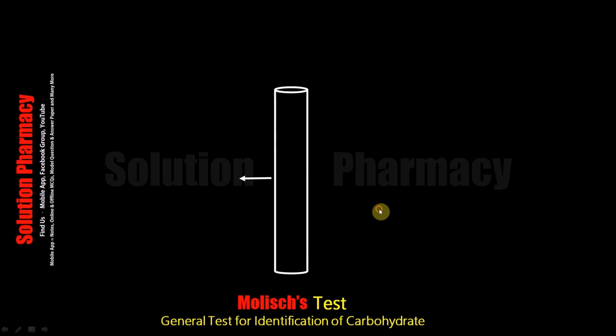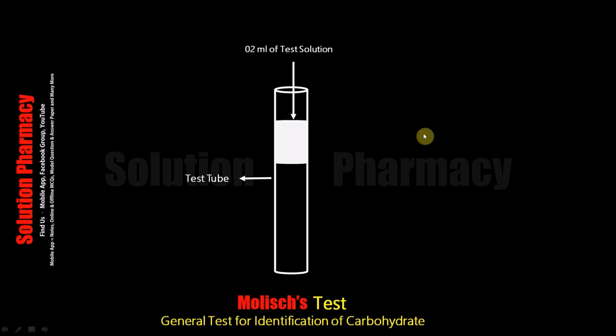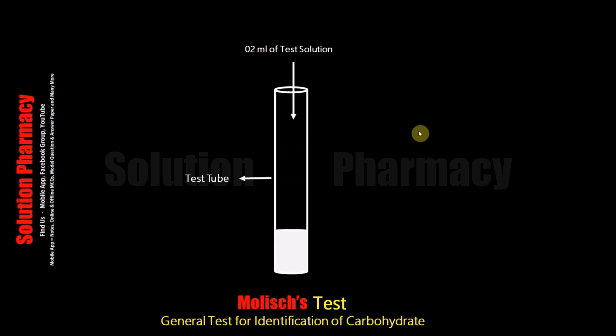First, take a test tube and then add 2 ml of the test solution. The test solution means the solution in which we have to detect the presence of carbohydrate. Our sample is either in the solid or liquid state.